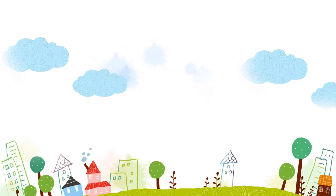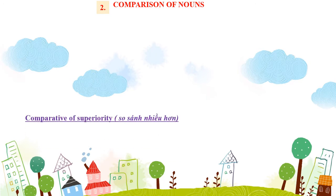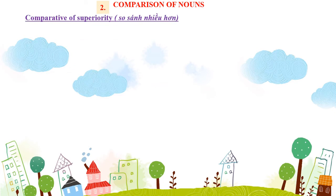Chúng ta qua mẫu câu thứ 2: So sánh hơn của danh từ – Comparison of Nouns. Chúng ta dùng more, less, fewer có thể được dùng như từ hạn định trước danh từ để so sánh nhiều hơn hoặc ít hơn về số lượng. Trước hết chúng ta so sánh nhiều hơn – Comparison of Superiority.